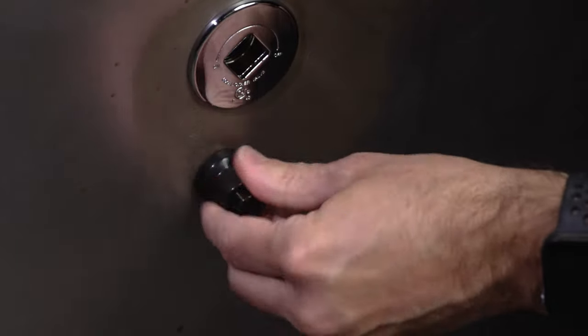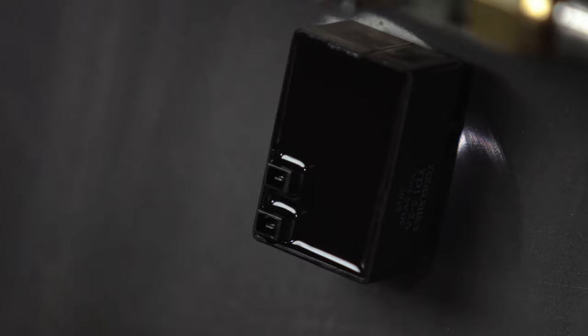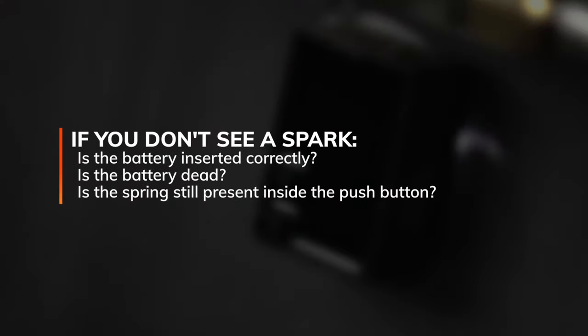Once the battery is installed, you should be able to push the button and hear the clicking sound of the spark, as well as see an actual spark on the back side of the spark module. If you're not seeing this, double-check that the battery is inserted correctly, that it is indeed a new battery, and that the spring didn't fall out by accident.